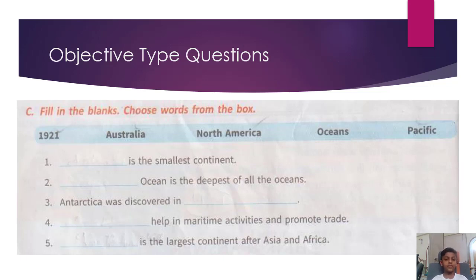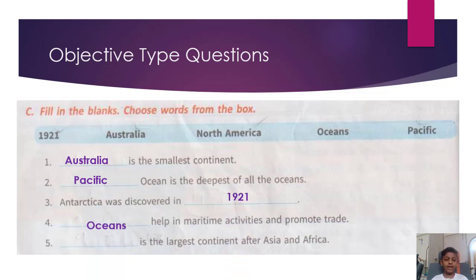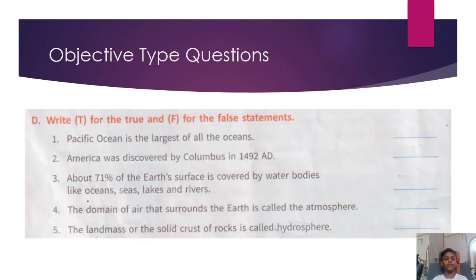C. Fill in the blanks. Choose words from the box. Australia is the smallest continent. Pacific Ocean is the deepest of all the oceans. Antarctica was discovered in 1821. Oceans help in maritime activities and promote trade. North America is the largest continent after Asia and Africa.